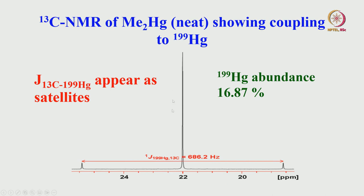The main peak comes from the CH₃ carbon attached to mercury. With proton decoupling, the carbon is coupled to Hg-199. The satellites are of fairly large intensity because Hg-199 abundance is close to 17%. Measure the separation between the two satellites to get the one-bond carbon-mercury coupling, which is quite large—approximately 686 Hz. As I have mentioned, for some heteronuclei the coupling can be of the order of several hundreds or even thousands of Hz. This is a large coupling between carbon and mercury-199.